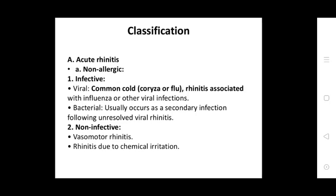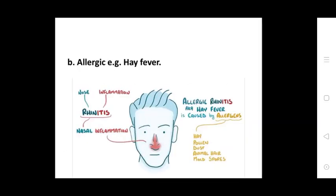Acute rhinitis may be non-allergic and first infective: viral, commonly called coryza or flu. Rhinitis associated with influenza or other viral infections. Bacterial rhinitis usually occurs with secondary infection following unresolved viral rhinitis. Non-infective vasomotor rhinitis is due to chemical irritation. Allergic: may cause hay fever. Nasal inflammation rhinitis.